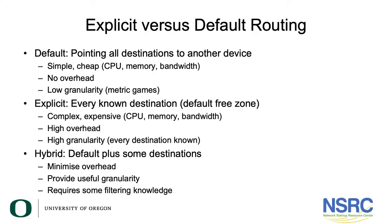What is the difference between explicit versus default routing? Default routing points all destinations to another device. This is very simple and cheap as it requires very low CPU, memory, and bandwidth. It also has no overheads and has very low granularity.